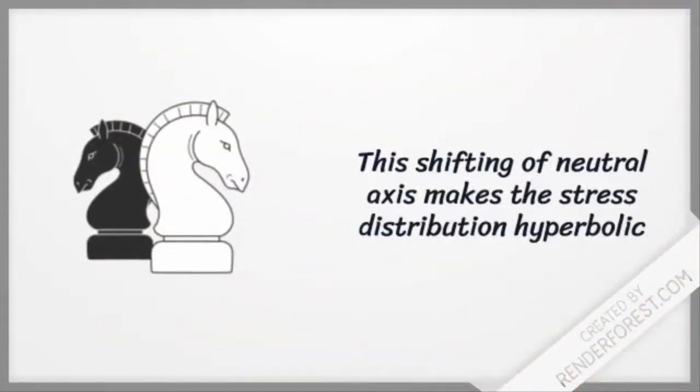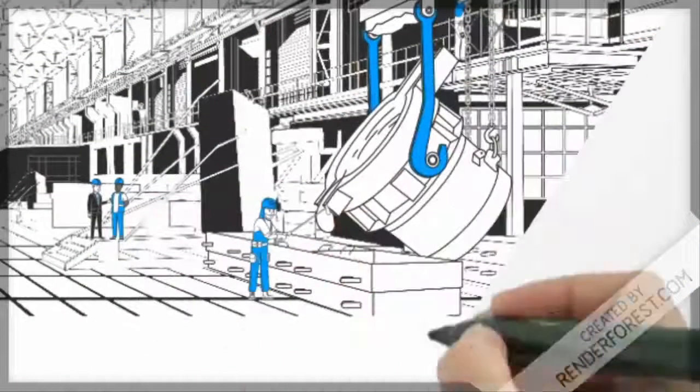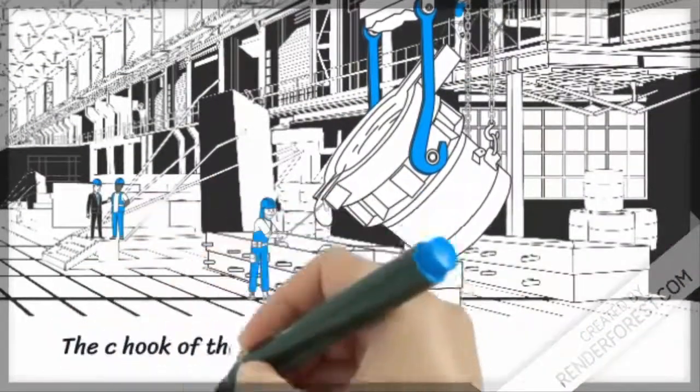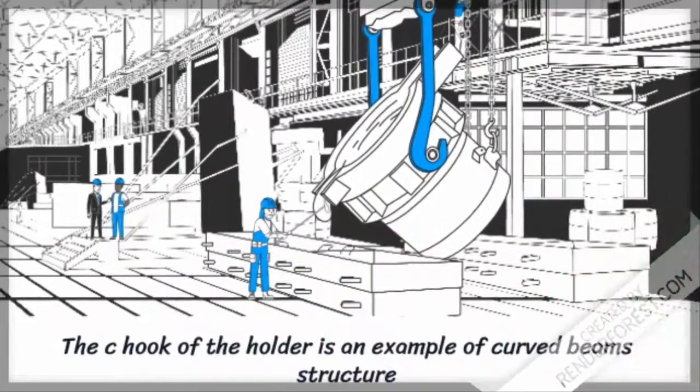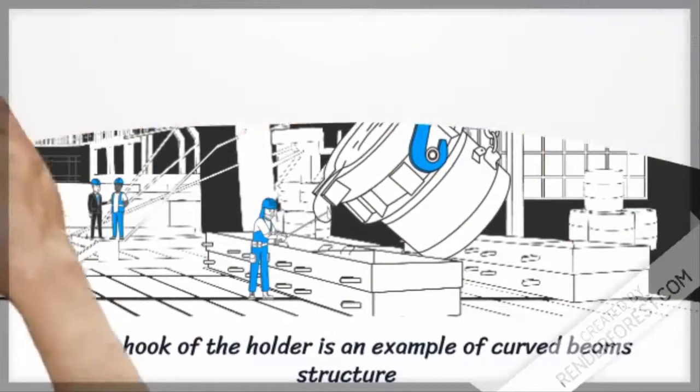This shifting of the neutral axis makes the stress distribution hyperbolic, where the magnitude will be different at both extreme ends. What you see here is an example of a curved beam. The C hook in blue color, and also the smaller one, are examples of curved beams.